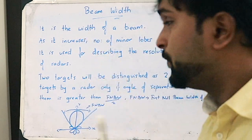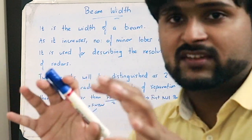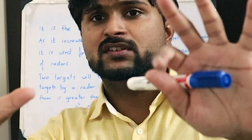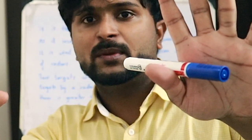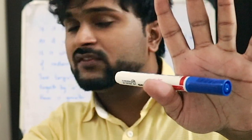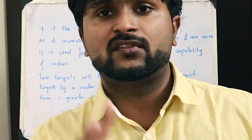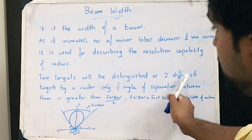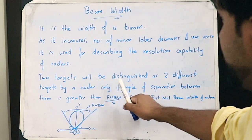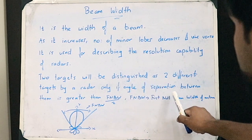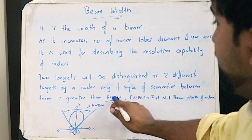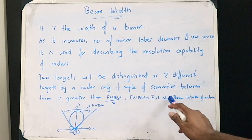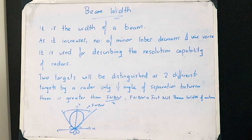So what is resolution capability? Resolution capability is the capability of a radar to distinguish between two different objects. For example, if both my hands are two different objects, a radar must be able to identify these two as two different objects. Two targets will be distinguished as two different targets by a radar only if the angle of separation between them is greater than FNBW divided by two, where FNBW is defined as the first null beam width of an antenna.